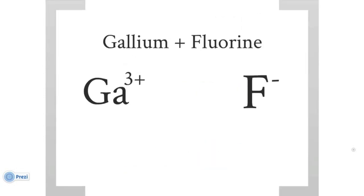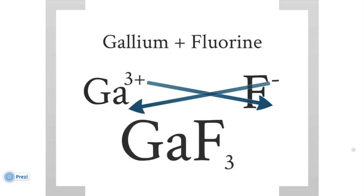Gallium and fluorine, as you can see gallium has a charge of plus 3, which is going into the bottom right hand corner. And then fluorine has a charge of negative 1, which is going to go into the bottom left hand corner, giving us GaF3 gallium fluoride.